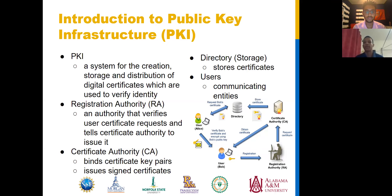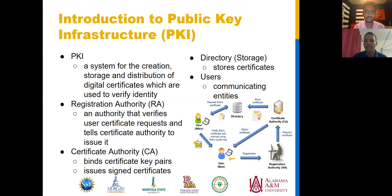A little bit of background on public key infrastructure, or PKI for short. A PKI is a system for the creation, storage, and distribution of digital certificates, which are used to verify the identity of online entities. The Registration Authority is an authority that verifies user certificate requests and tells the Certificate Authority to issue those certificates. The Certificate Authority binds certificate key pairs, and it issues and signs those certificates. Typically in a PKI, the Certificate Authority is a third party, which is the main reason for creating a private Certificate Authority. The directory stores the certificates.